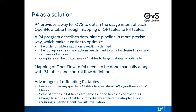We believe that P4 provides a way for OBS to obtain the usage intent of each OpenFlow table through mapping of OpenFlow tables to P4 tables. A P4 program can describe Datapath plane pipelines in a more precise way, which makes it easier to optimize. The order of table evaluation is explicitly defined. The lookup key fields and the actions are defined only for desired fields and only for the sequence of actions needed. With the full pipeline specified in a single program, a compiler can be utilized to map all P4 tables to the target Datapath as optimally as possible, with the consideration of target pipeline capabilities in mind.